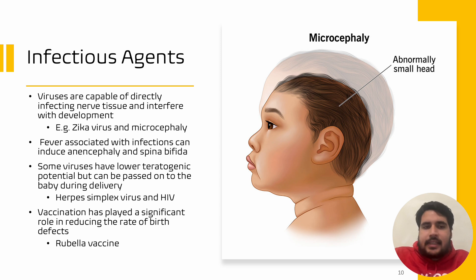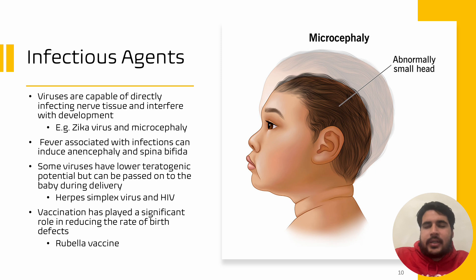Lastly, vaccination has played a significant role in reducing the rate of birth defects. For example, 90% of pregnant women now have antibodies against the rubella virus, and this has really reduced the amount of birth defects caused by infectious agents such as the rubella virus.